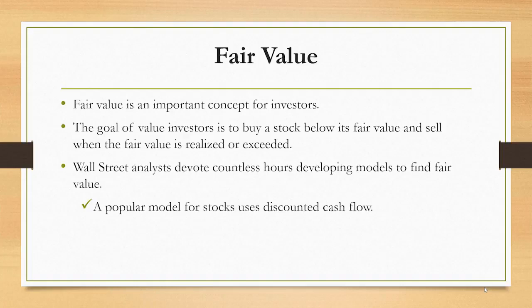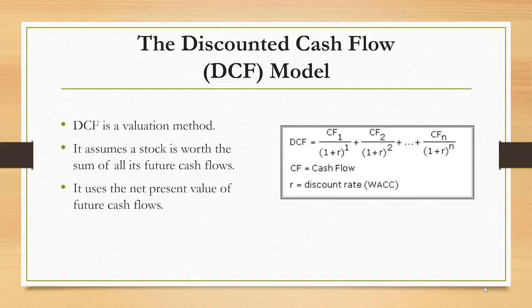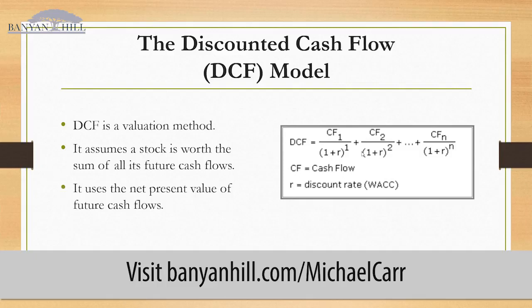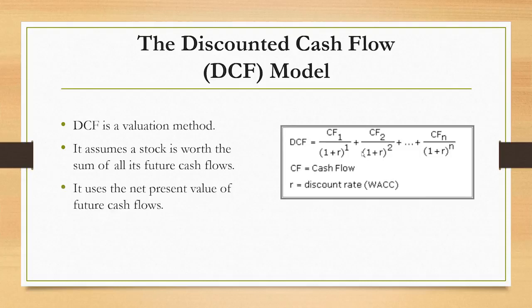Analysts develop models to try to understand the fair value of an asset, like a stock, and then they publish their estimates. A popular model they use is the discounted cash flow model, which assumes that a stock is worth the sum of all of its future cash flows. The analyst will estimate cash flows in each of the coming quarters, then discount them, recognizing that a dollar in the future will be worth less than a dollar today, assuming inflation. They'll use the weighted average cost of capital or a discount rate such as the interest rate on treasury notes.